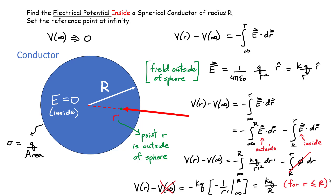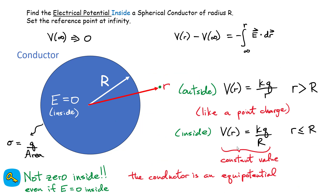When you substitute the limits, the term at infinity goes to zero, and substituting the upper limit R gives the final expression: kq divided by the radius of the sphere — a constant value. This is true for any point inside this radius. So outside, the electrical potential looks like kq/r, where r is the distance from the center. But inside the sphere, we have kq/R — a constant. The potential is not zero inside even though the electric field is zero inside. The whole conductor is an equipotential with a constant electrical potential.